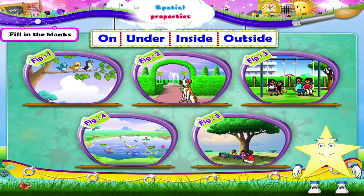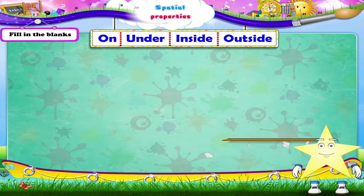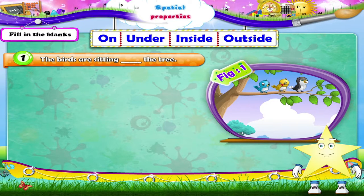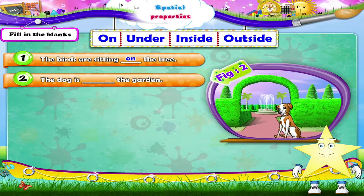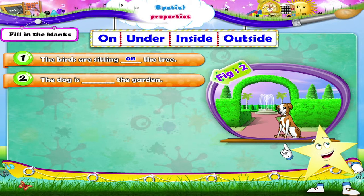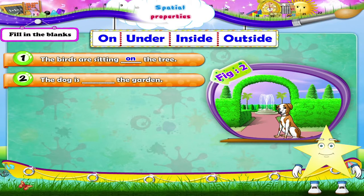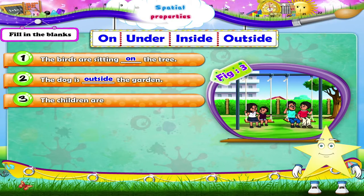Look at the picture and fill in the proper word. Which is the correct word here, Starry? Yes, the dog is outside the garden. Now the next one — the children are sitting ___ the swing. The children are sitting on the swing.